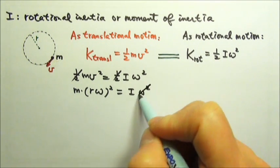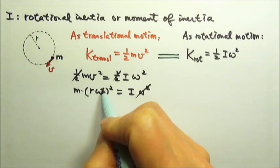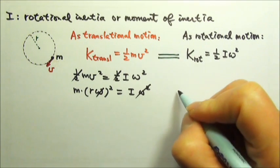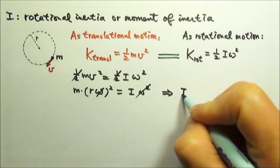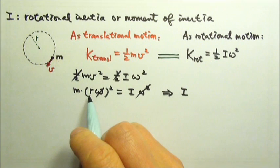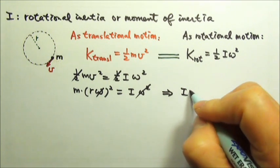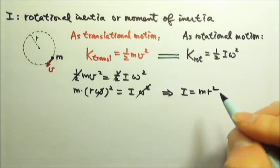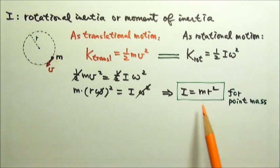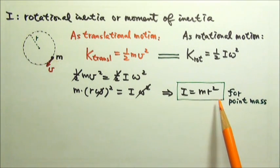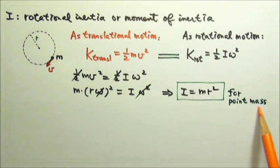Which means we can cancel omega squared. So we are left with I equals to m r squared. So here we have the equation for the rotational inertia of a point mass.